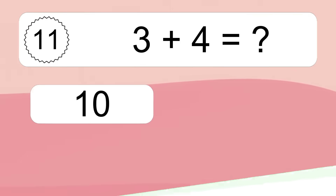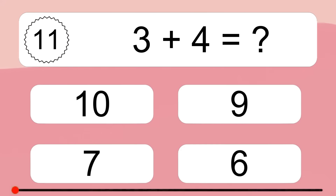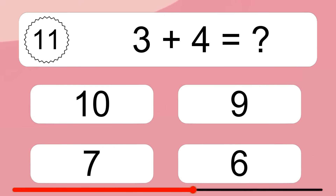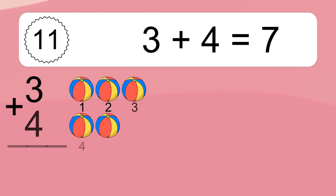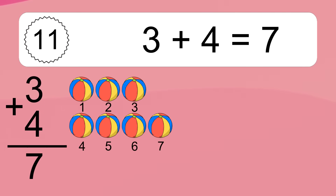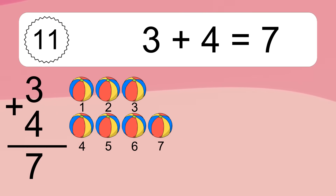3 plus 4 equals what? 3 plus 4 equals 7. Let's count it: 1, 2, 3, 4, 5, 6, 7.